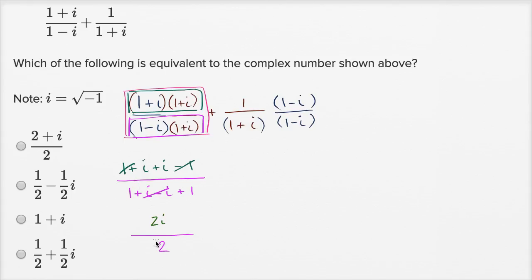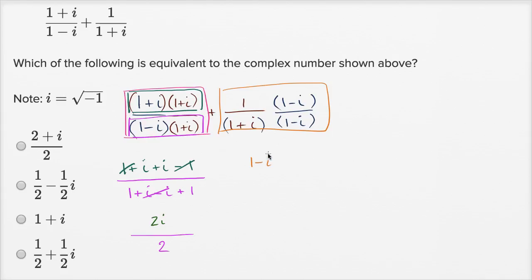My goal here isn't to simplify yet — I want to have a like denominator, so I'll leave it as 2i/2 for now. Moving on to the second fraction: the numerator is simply 1 times (1-i), which is just (1-i). And the denominator is (1+i)(1-i), which we just figured out simplifies to two.